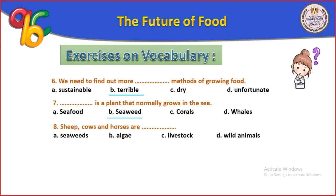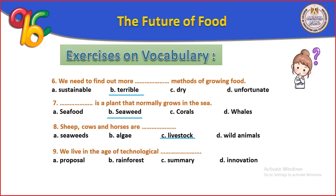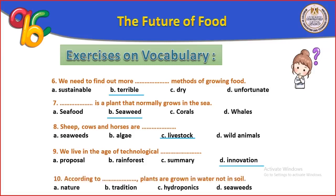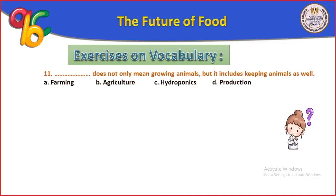Sheep, cows, and horses are livestock. We live in the age of technological innovation. According to hydroponics, plants grow in water not in soil. Farming includes both growing crops and keeping animals. Agriculture is the science of farming only, while farming includes animal husbandry as well.